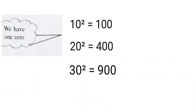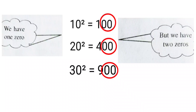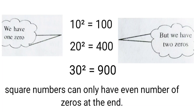Observe this pattern: in 10, 20, and 30 there is one zero, and in their squares we have two zeros. So what do you observe? Square numbers have only an even number of zeros at the end. The square of 10, 20, 30 — whatever it may be — ends in an even number of zeros.